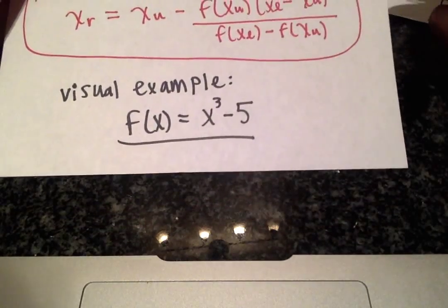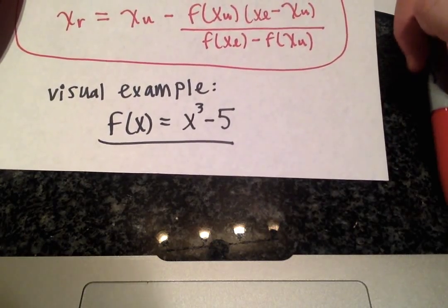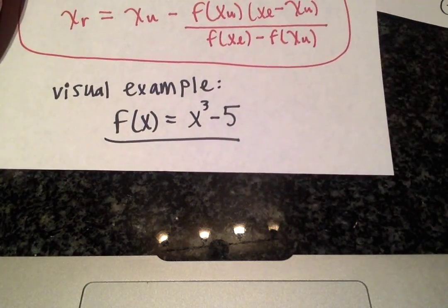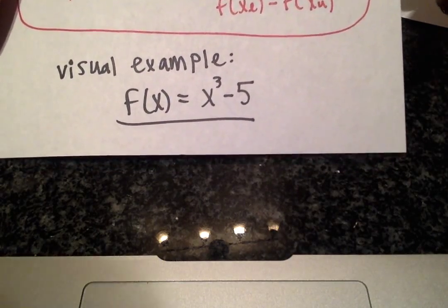And I'll show you a brief visual example for the false position method, how x_r is calculated visually, with the example f of x equals x cubed minus 5.